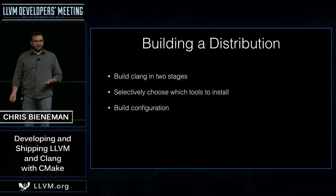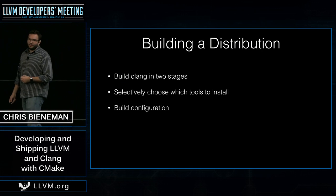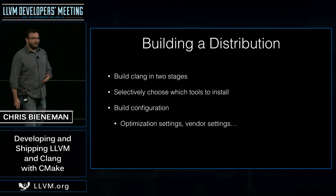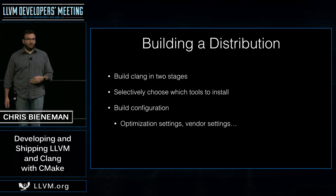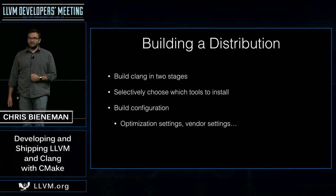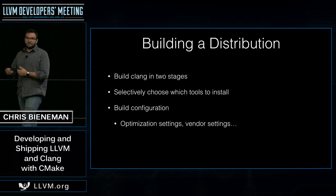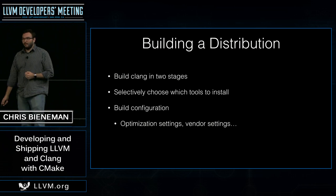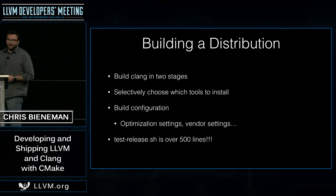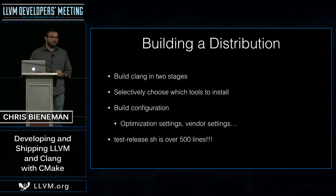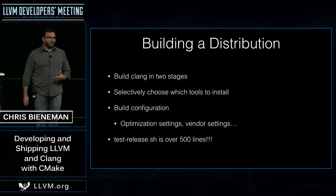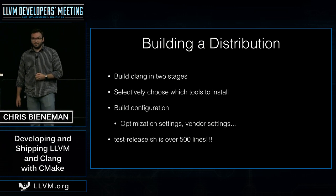Another thing that happens with shipping a distribution is you probably want to set some build configuration settings — these could be optimization settings or vendor settings. An example of a vendor setting is the setting that controls the bug reporter URL Clang prints when it crashes; if you're a company like Apple, you might want to replace that with a link to developer.apple.com instead of the LLVM.org bug tracker. For context, the test release shell script on LLVM.org today is over 500 lines — a pretty complicated process with opportunity to make it much easier.